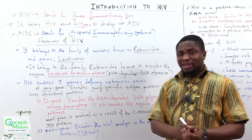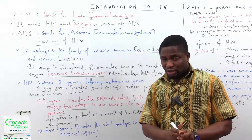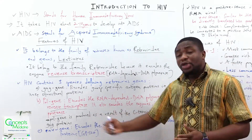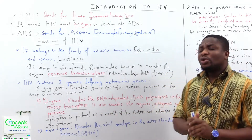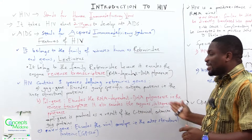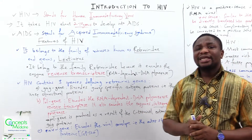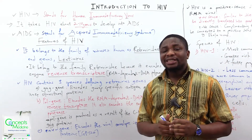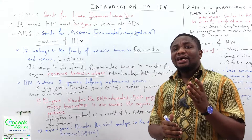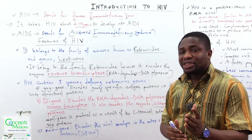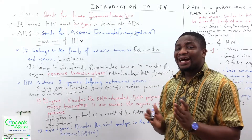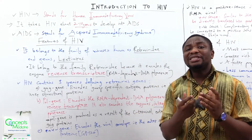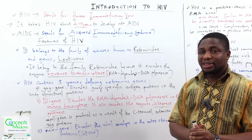How is the POL gene produced? The POL gene is produced as a result of the C-terminal extension of the GAG proteins. That means the POL gene and the GAG gene are coming from the same proteins.